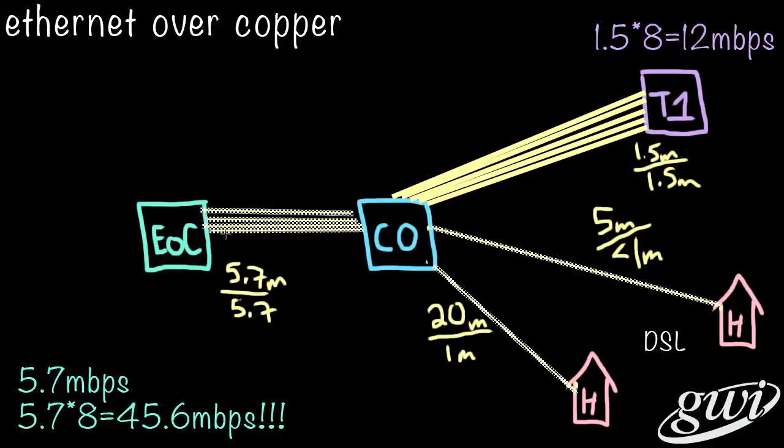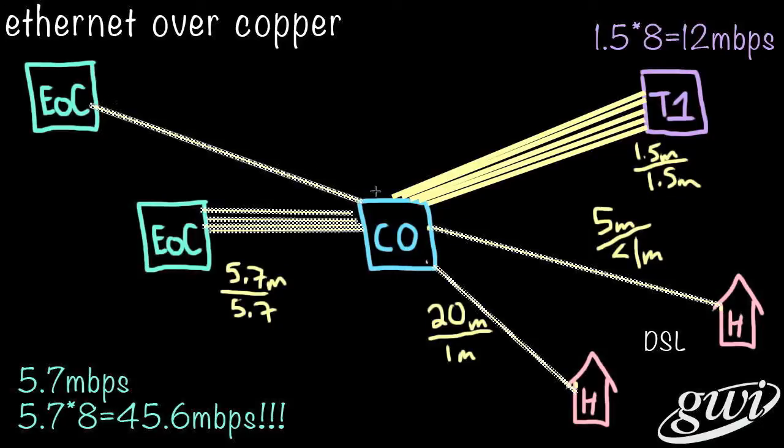Now EOC isn't perfect. Like residential DSL, distance is a factor. The further away you are from the CO, the less speed you'll be able to get. But with the bonding of eight loops, you can still get there in the speed.